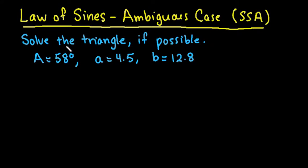The ambiguous case is when we know side-side-angle. That means that we know two sides with a non-included angle. And if you remember from geometry, this is one of the two things that did not prove triangle congruence.